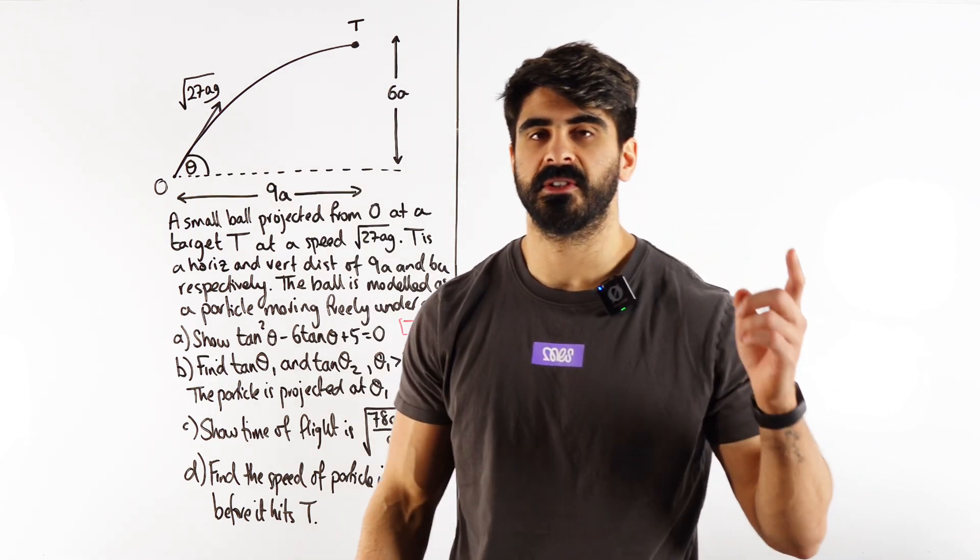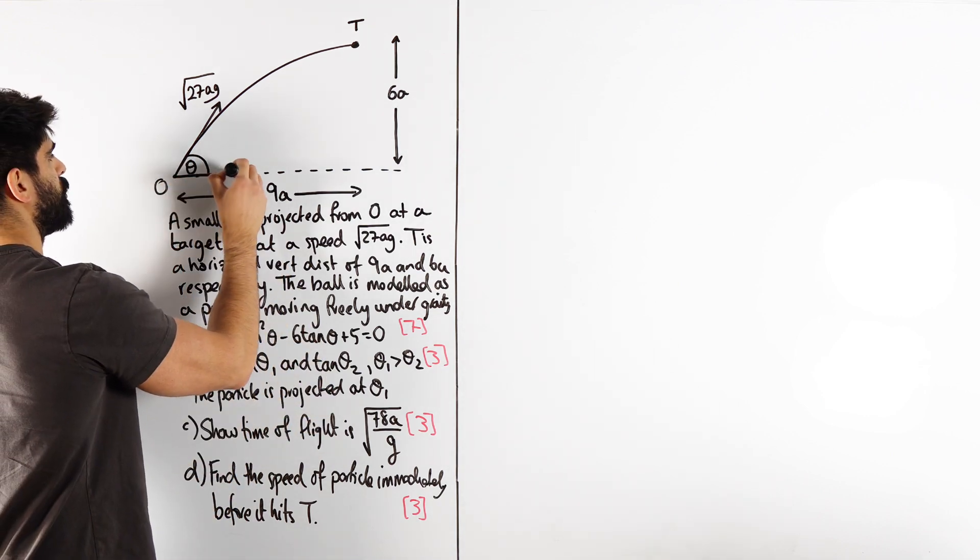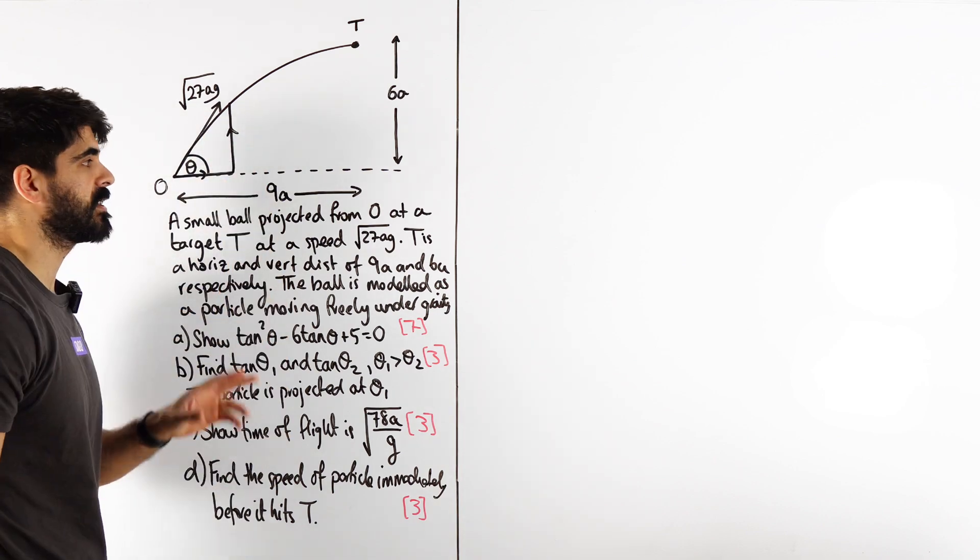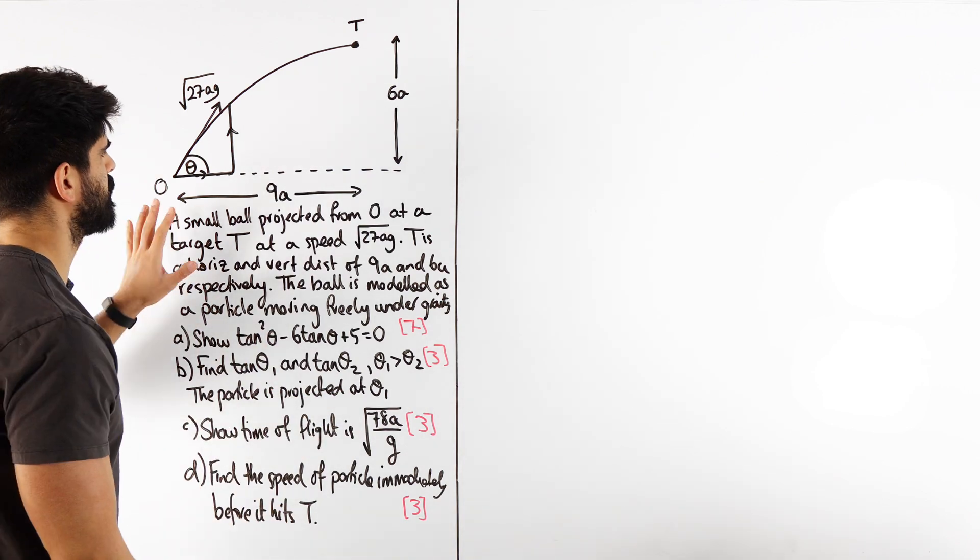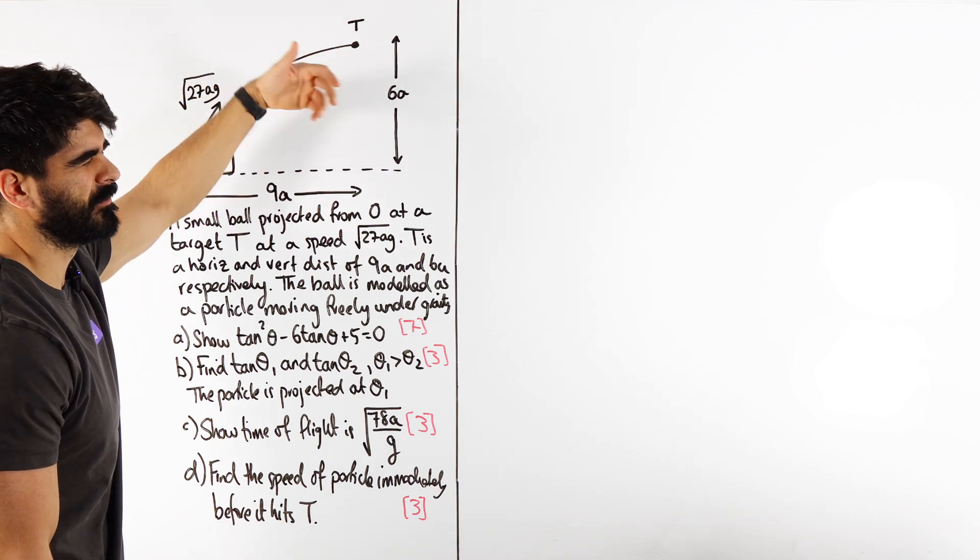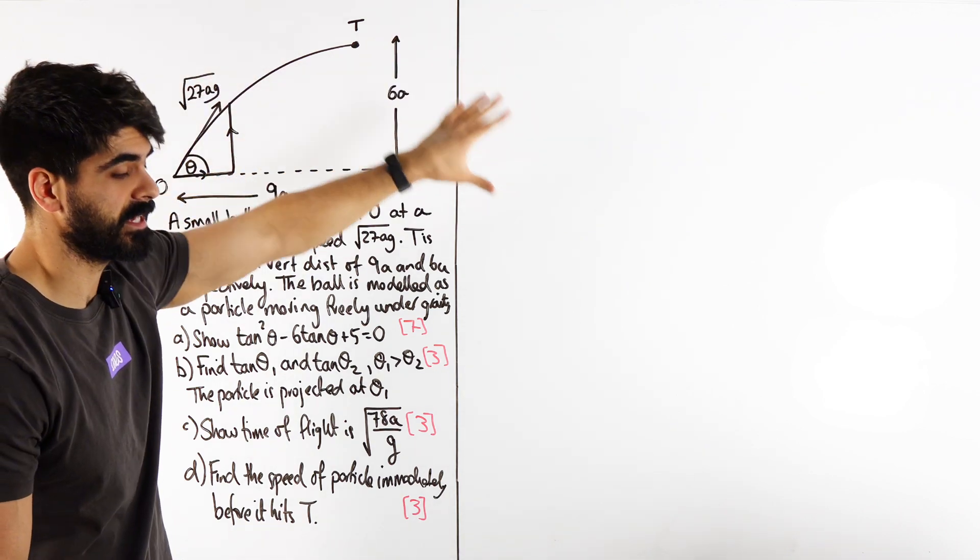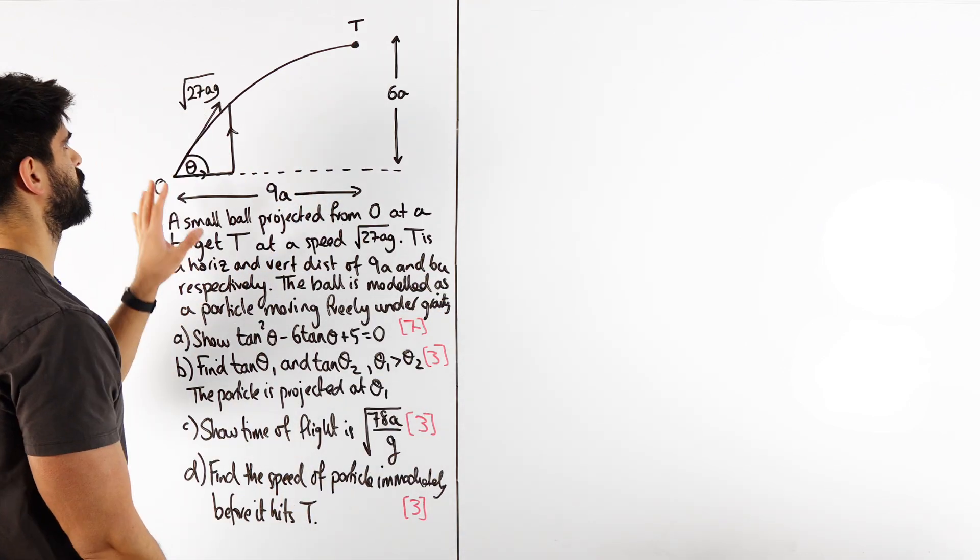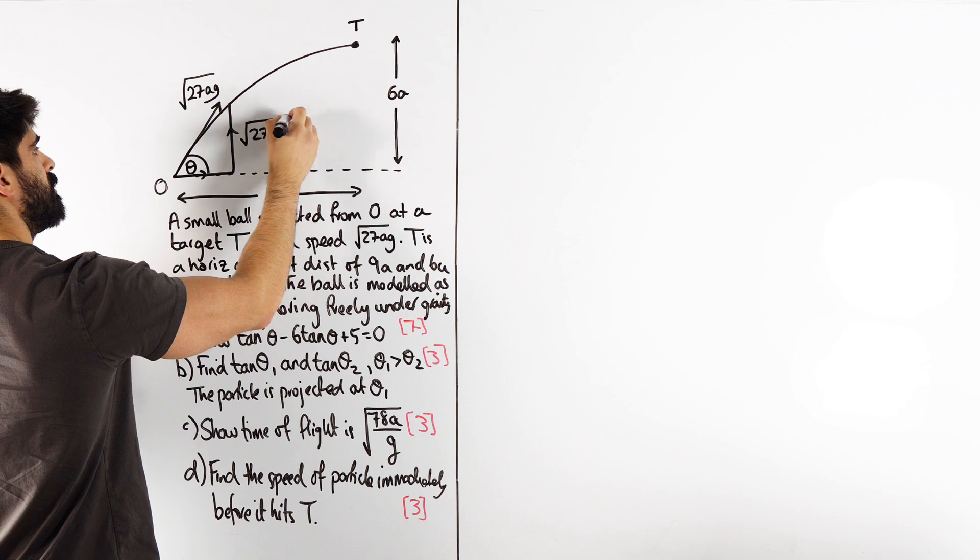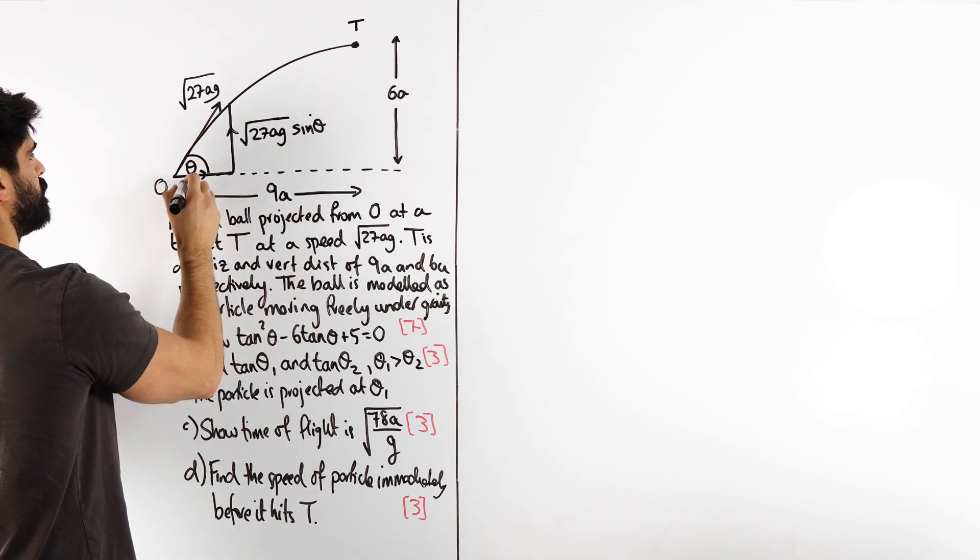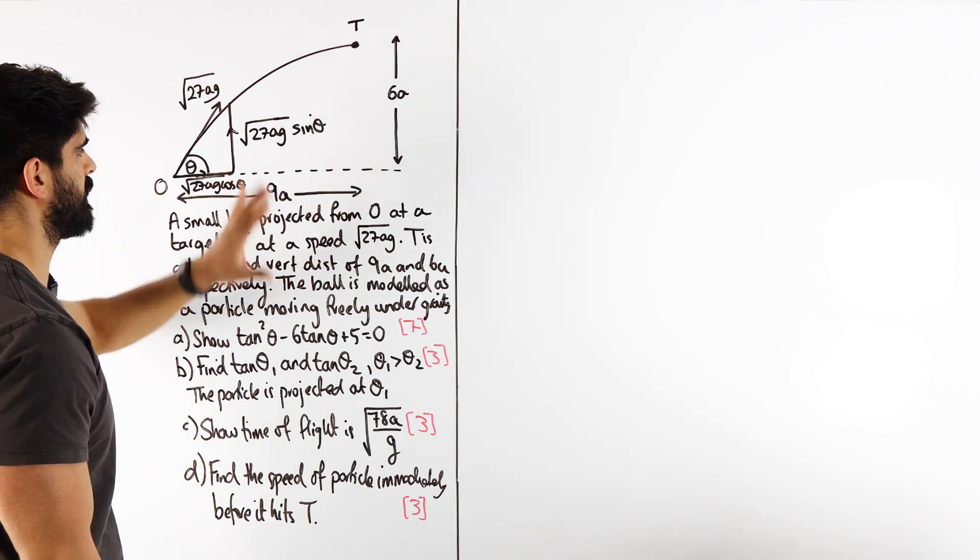With all of these 2D projections, always resolve just like forces to make sure that everything is pointing up, down, left, right. This resolving is just a pain, so we have this opposite side being root 27ag sin theta and the adjacent side is root 27ag cos theta. Once we've done that, everything's up, down, left, right - it's looking good.